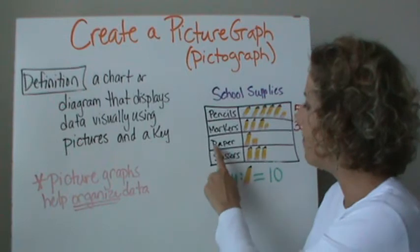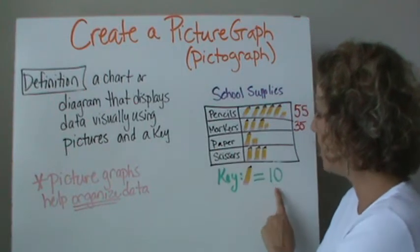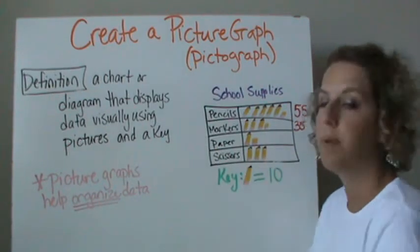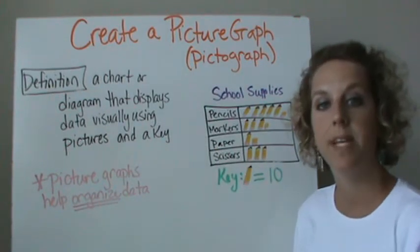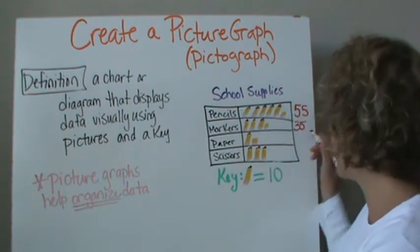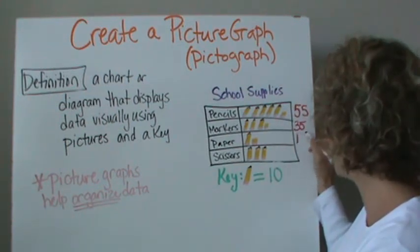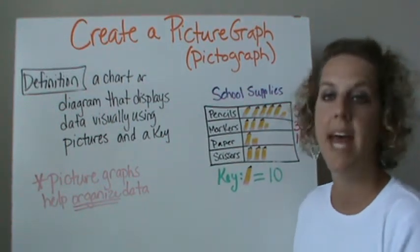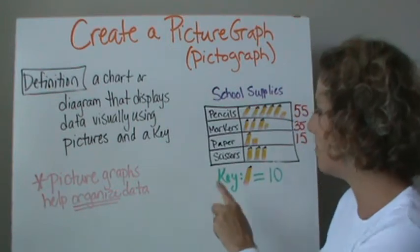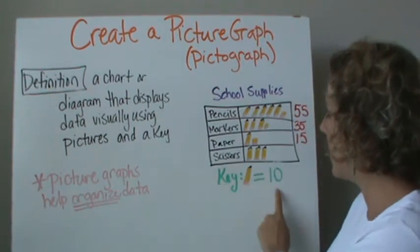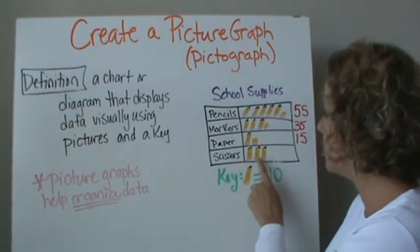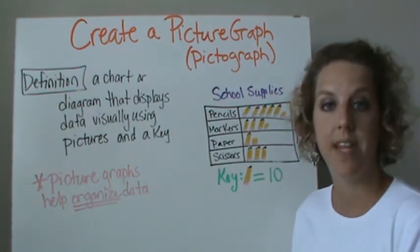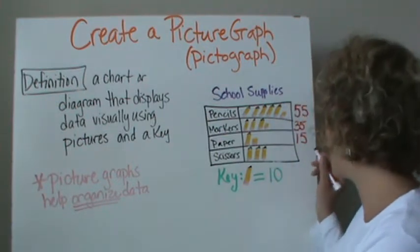For paper, I counted by tens. I have 10, plus the half of a pencil is five, so I have 15 packs of paper. And then for scissors, I have 10, 20, 30. I don't see any halves, so that's exactly 30.